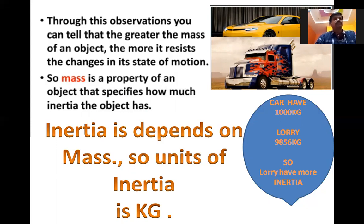The greater the mass of an object, the more it resists the change in its state of motion. Mass is a property of an object that specifies how much inertia the object has. The units of inertia are kg. For example, a car has 1000 kg and a lorry has 9,856 kg. The lorry has more mass, so it resists change in its state of motion more — it has more inertia. Inertia depends upon the mass, so the units of inertia are kg.